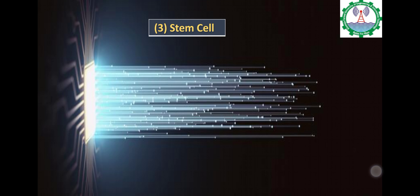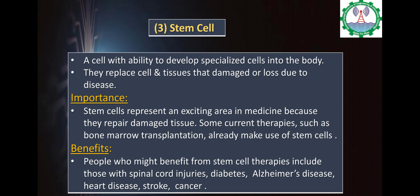Number 3: Stem Cells. Stem cells have the ability to develop into specialised cells. These cells replace tissues that are damaged or lost. Stem cells play an important role in medicine by repairing damaged tissues. Therapies include bone marrow transplants. Benefits include treatment for patients with spinal cord injuries, diabetes, Alzheimer's disease, and heart disease.